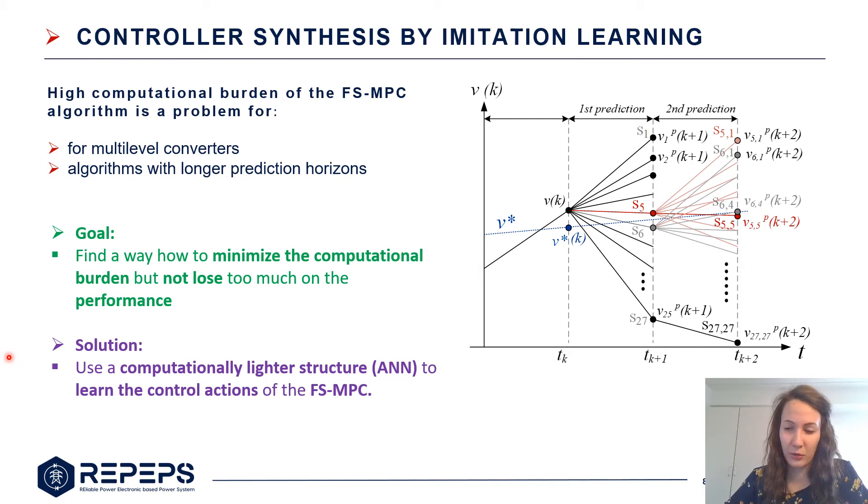We can see in this case an example using a two-step horizon where we start first with 27 different switching vectors and we end up with 729 switching combinations. So our goal now is to find a way how to minimize this computational burden but not lose a lot on the performance.